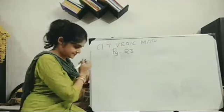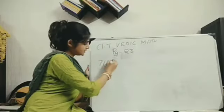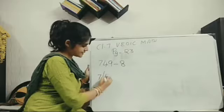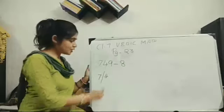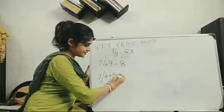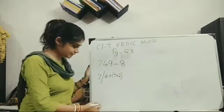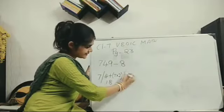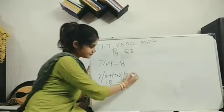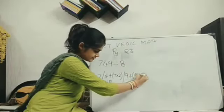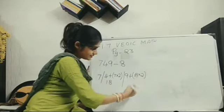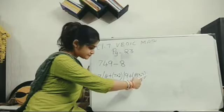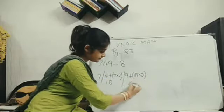Okay. Next. 749 divided by 8. So 7 comes down. Then 4 plus 7 into 2 means 14 plus 4 gives me 18. Then 9 is left now. 9 plus 18 into 2. So 18 into 2 means 36, 36 plus 9 will give me 45.